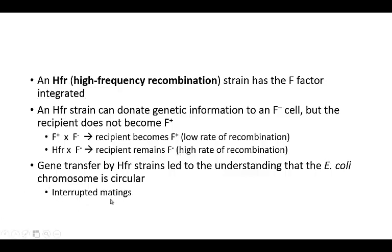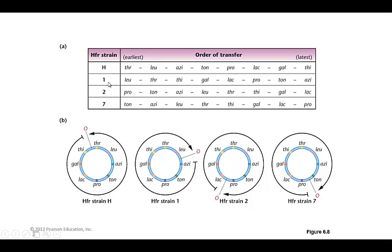They performed what we call interrupted matings — they allowed the HFR strain to donate some of the chromosome, then stopped it before it was complete. By looking at a number of different HFR strains, you can see the order of transfer of different gene regions. One strain starts here and transfers in one direction; another starts in a different location and goes in a different direction, but the same gene components appear just in reverse order. By examining the order of transfer of these genes across different strains, you can determine that the whole chromosome is circular, not linear.